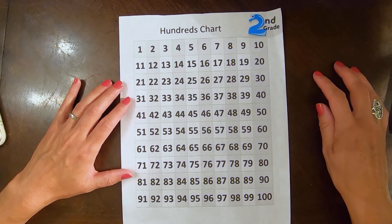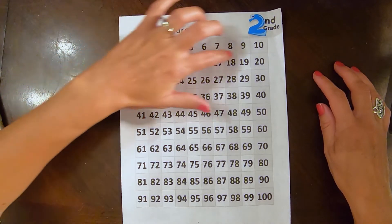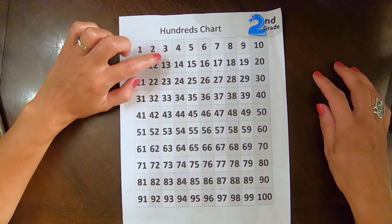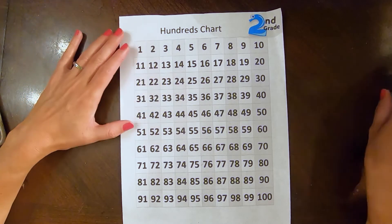Now, what happens if we start with a number in the middle? Well, let's look at 3. 3, 13, 23, 33.